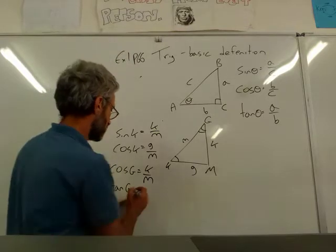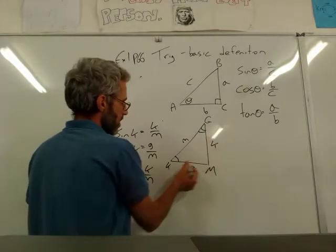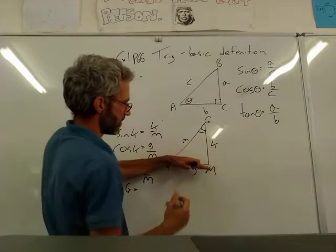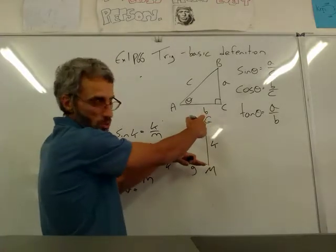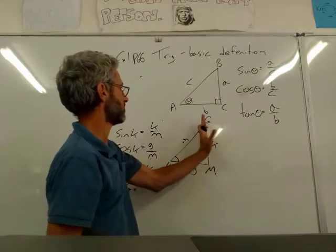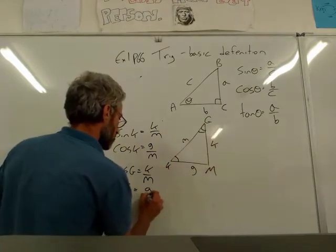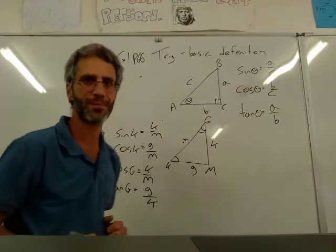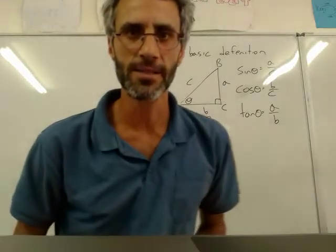And then tan G. Tan G. So that's going to be the opposite side. Opposite to what? Opposite to G. Divide by the adjacent. Divide by K. So it's going to be G over K.